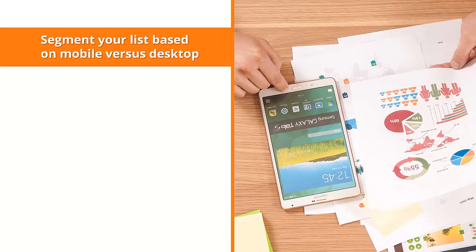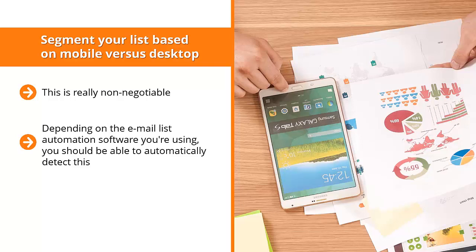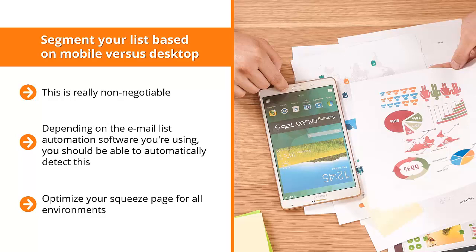Segment your list based on mobile versus desktop. This is really non-negotiable. Over 60% of internet users view the internet through a mobile device, and these devices have different screen sizes. Make sure your mailing list segments buyers based on their screen preference. Depending on the email list automation software you're using, you should be able to automatically detect this. Regardless, your squeeze page must be mobile ready. It doesn't matter what device visitors use — your page should look its best. Optimize your squeeze page for all environments, whether your audience is viewing through a mobile phone, a desktop, or a tablet.